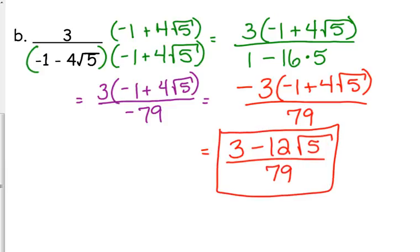Negative 3 plus 12 square root of 5 over 79. That's how the answer will appear. I just left it in factored form to check to see if it would simplify the denominator. If it doesn't, then you can go ahead and distribute it. Don't leave negatives in the denominator. Ever.